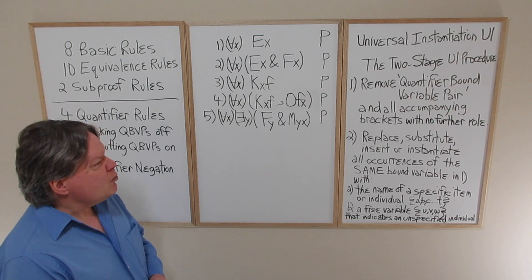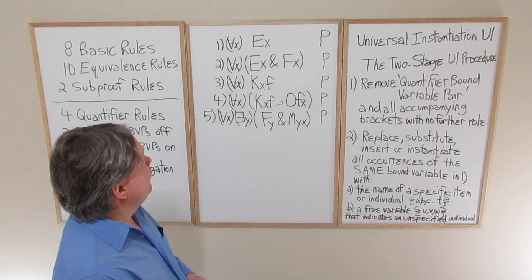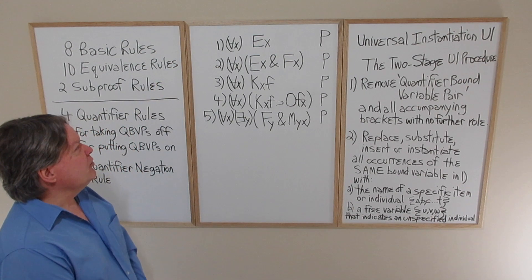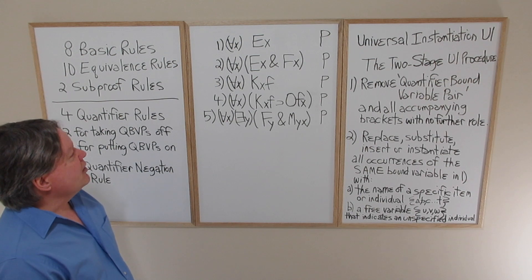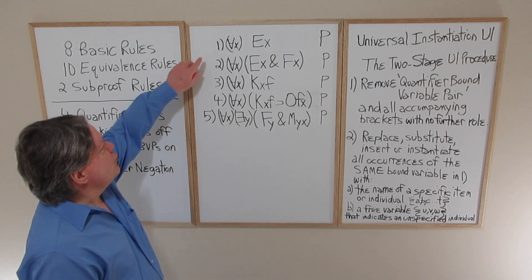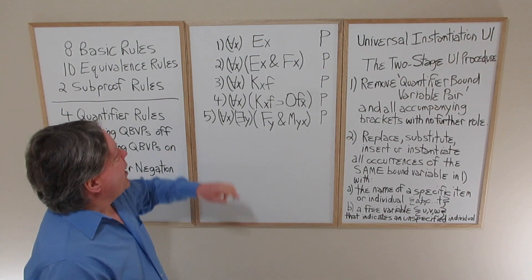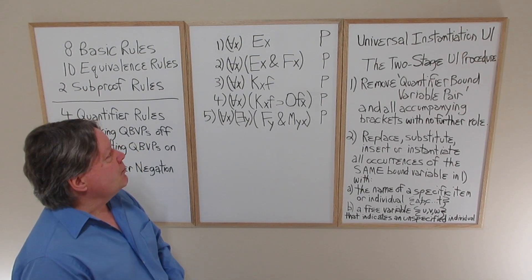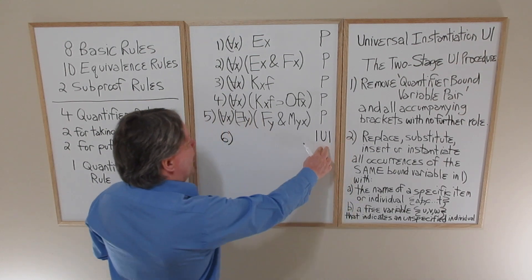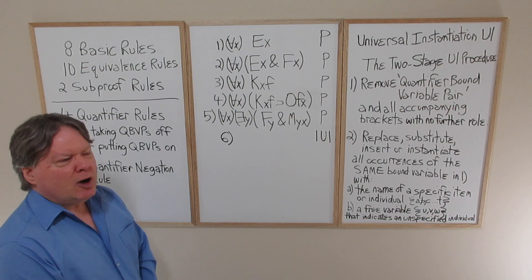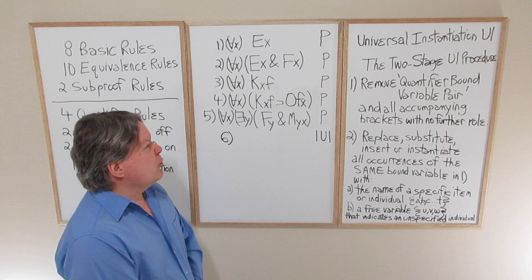The first stage: remove the quantifier bound variable pair and all accompanying brackets that have no further role. In this first sentence — everyone understands English — if we want to remove the universal quantifier and bound variable, we remove that as well as the decorative brackets. There are no other accompanying brackets. So that's the first stage. If we're at line six, we put '1 UI' in the justification column. All four quantifier rules are one-line rules.